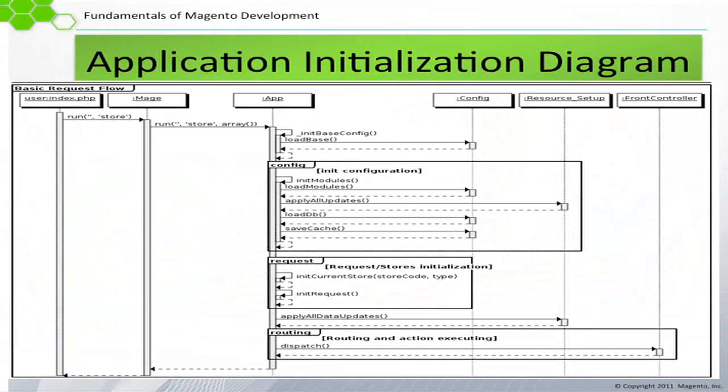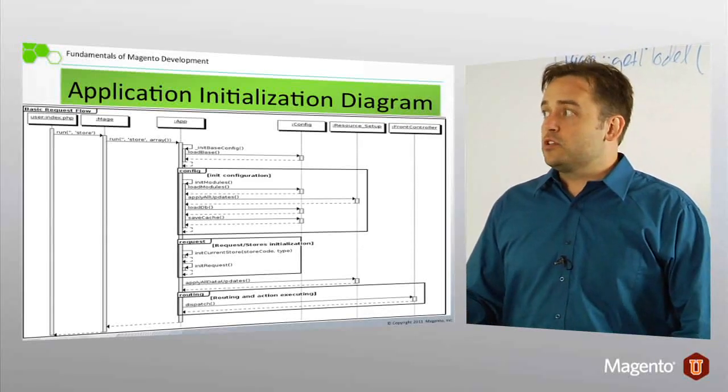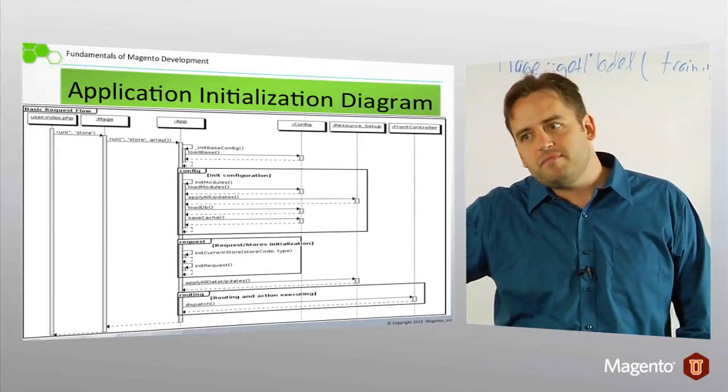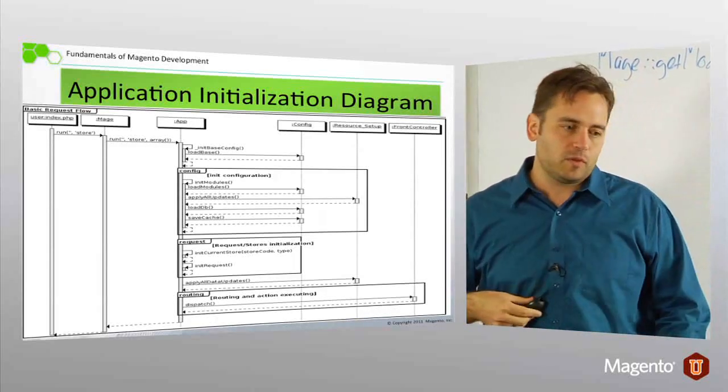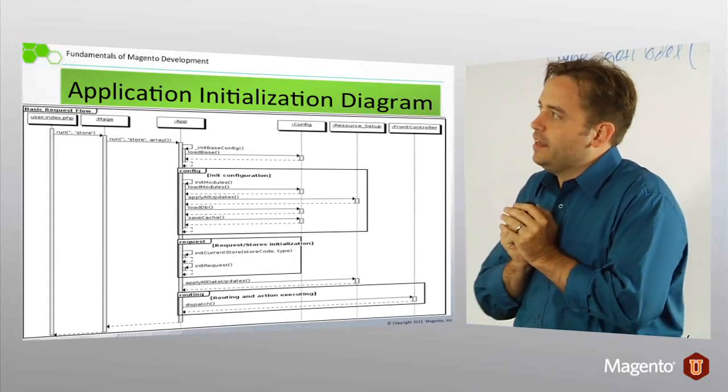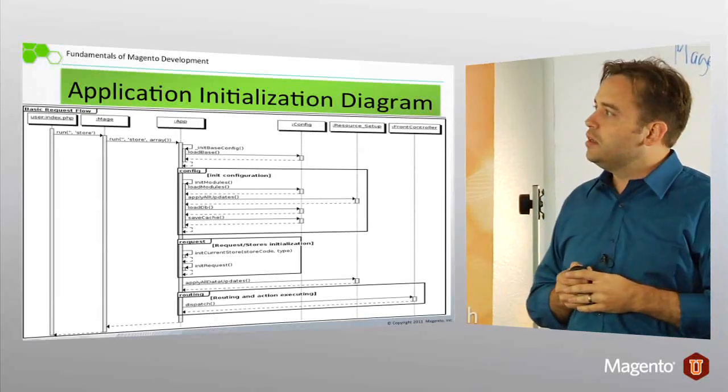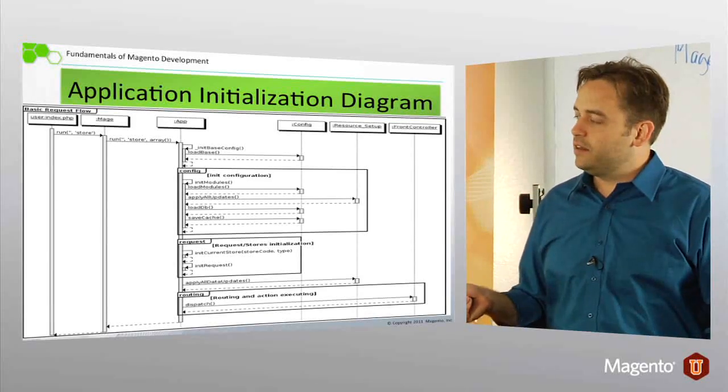So, exhibit A. We start here, index.php. You'll recall yesterday, we opened up this file, and in there was mage run. We can pass in a store code and specify a certain store to run. So that's the mage class, the store run. Mage run calls app run. That's mage core model app. That's the Magento application. That's basically the heart. We have to set up our essential, basic configuration. There are a couple of methods that gather this information from configuration files, including local.xml.